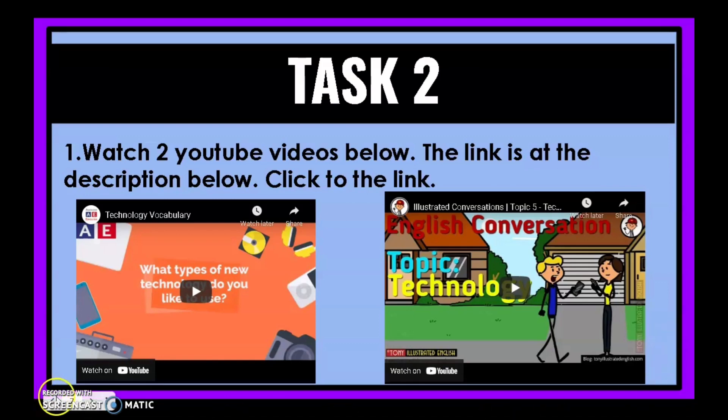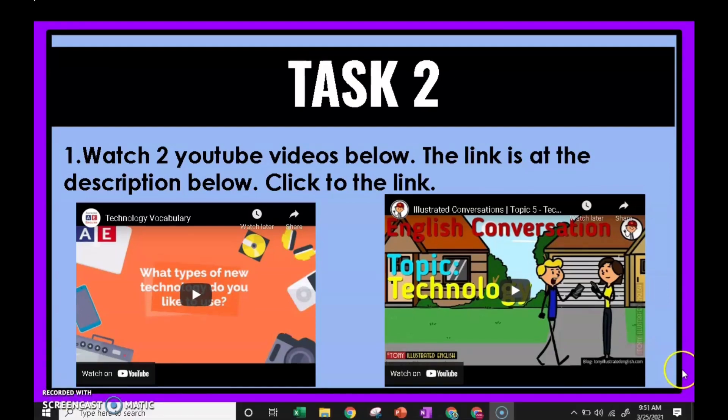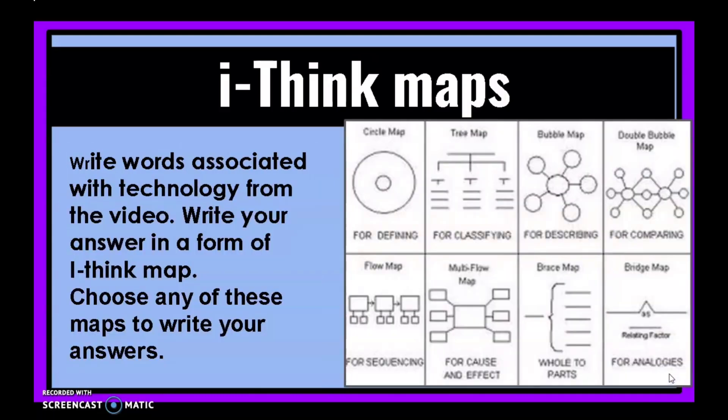You listen to the audio. You watch the video and then you do the exercise. Let's look. What is the exercise? Write words associated with technology from the video. When you listen to the video, there are words associated with technology. So I want you to pick the words and write your answer in the form of I-think map.